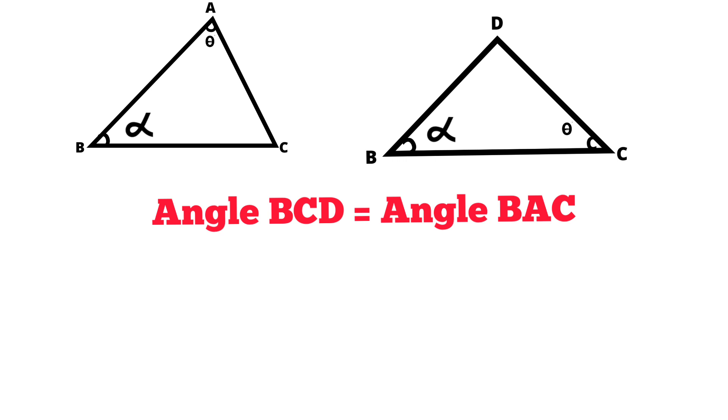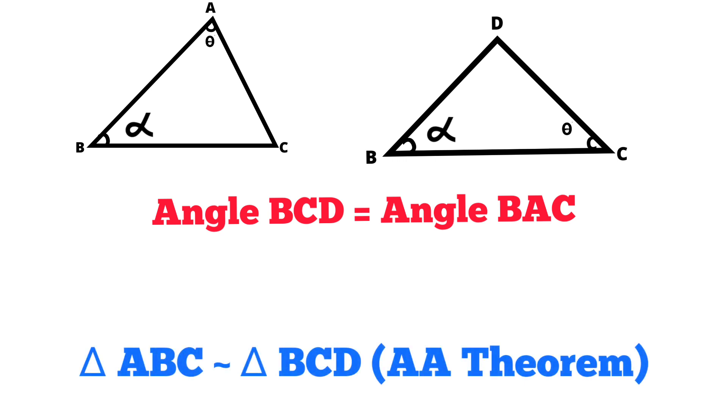Then, with the help of angle angle theorem, we can say that triangle ABC is similar to triangle BDC. And we already know that if two triangles are similar to each other, then their corresponding sides are in equal proportion.